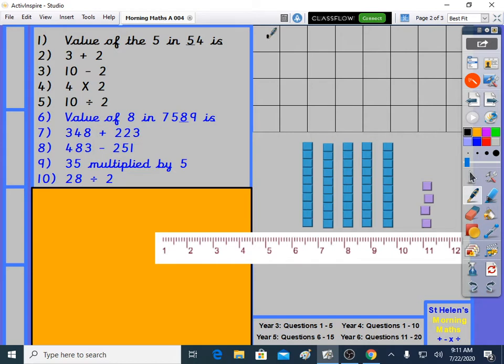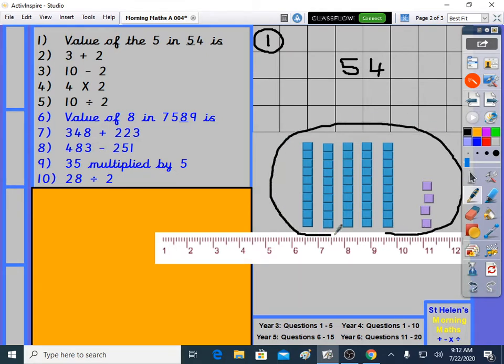Year 3, question 1. It says value of the 5 in 54 is. So the number 54 looks like this. Or if you draw a picture of it, with these blocks, it looks like this.